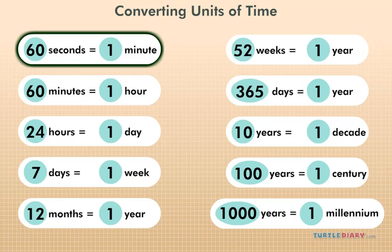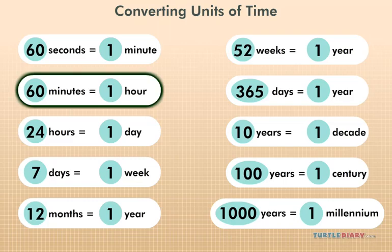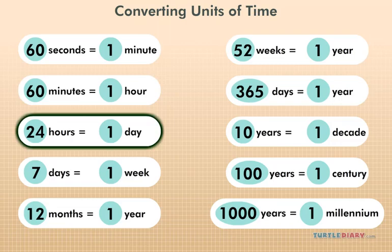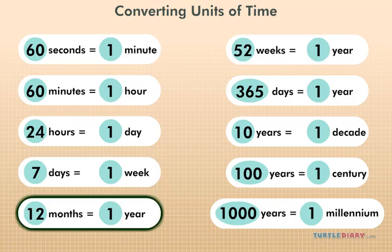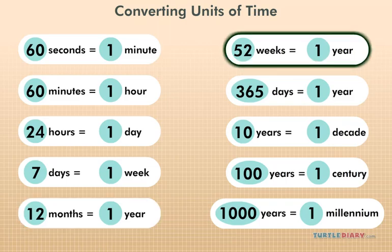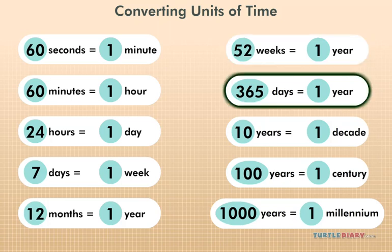Sixty seconds equals one minute. Sixty minutes equals one hour. Twenty-four hours equals one day. Seven days equals one week. Twelve months equals one year. Fifty-two weeks equals one year. Three hundred and sixty-five days equals one year.